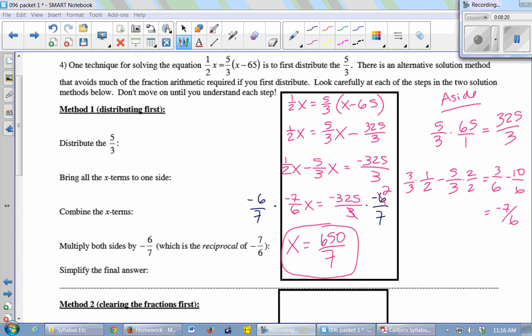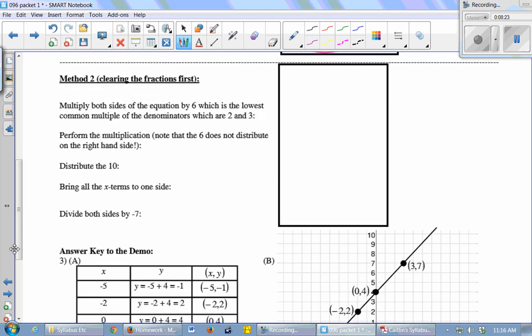So here's method 2. Method 2 clears all the fractions, so that you don't have to do a lot of arithmetic with fractions. So let's rewrite the equation. We've got (1/2)x equals (5/3) times (x minus 65). So my key step here is that I want to get rid of the fractions, so I'm going to multiply both sides of the equation by 6. What was special about, why 6? It was the common denominator. So we multiply everything on both sides by 6. So multiply everything here by 6. Multiply this whole side by 6.